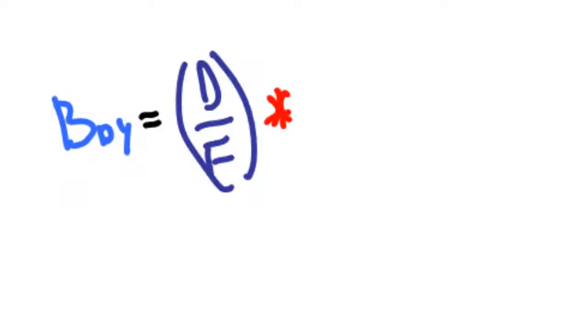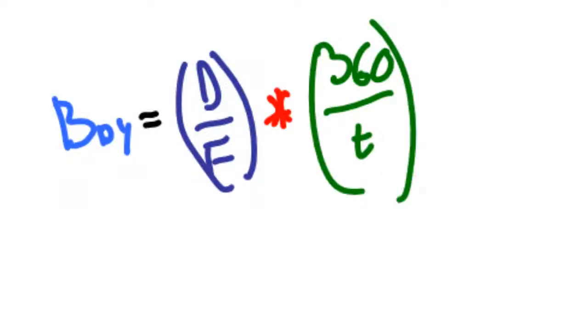We can write these formulas out in a shorter format. So BDY equals D divided by F multiplied by 360 over T, and D equals F minus P.